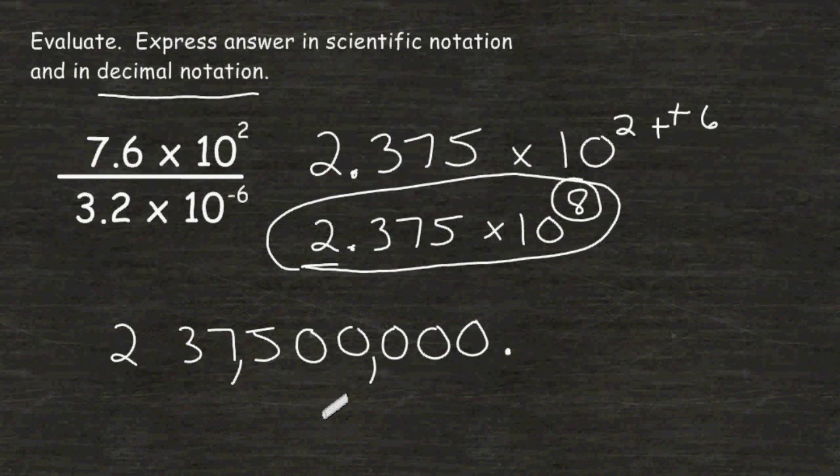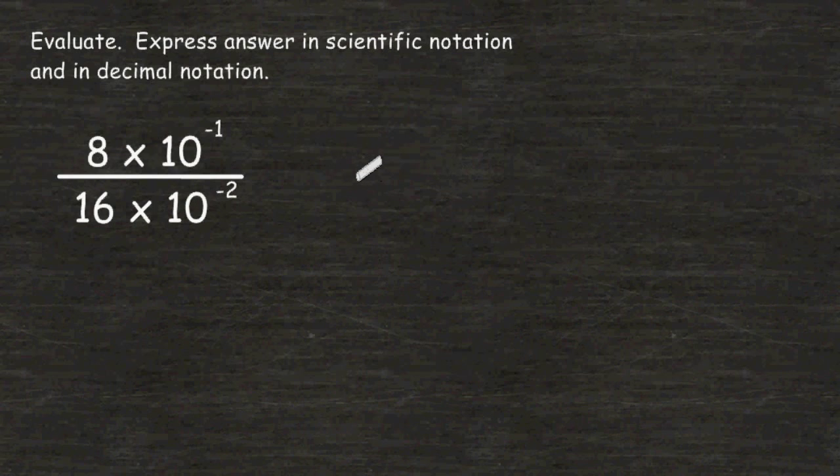Let's try another example. First, let's start by dividing 8 by 16. And we should note that 8 over 16 is the same thing as 1 half. And as a decimal, 1 half is equal to 0.5.